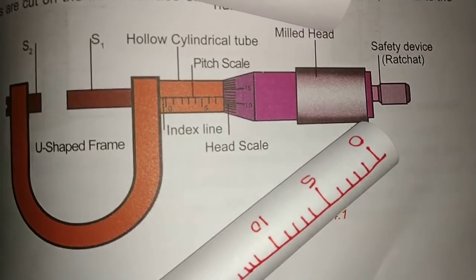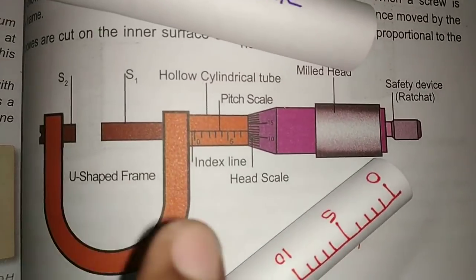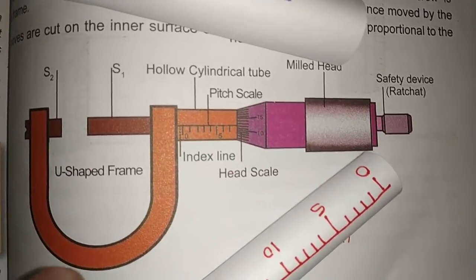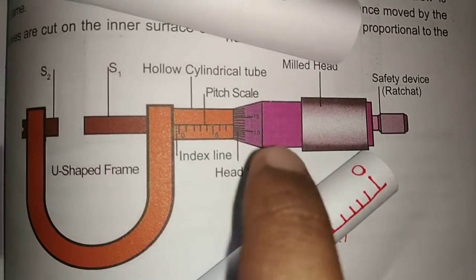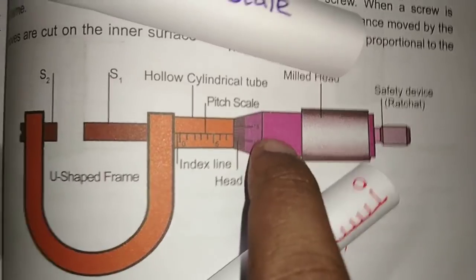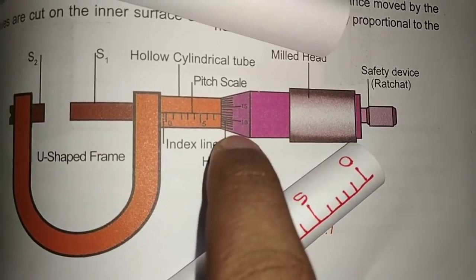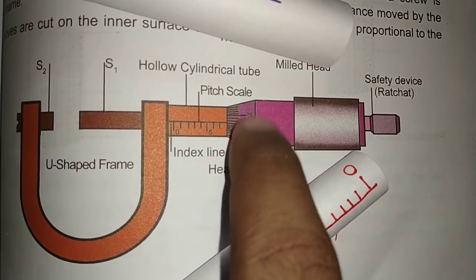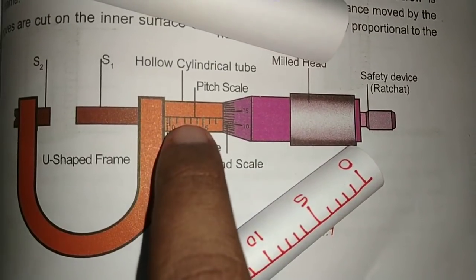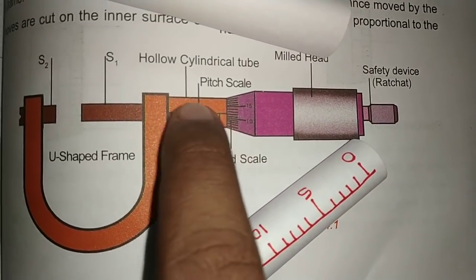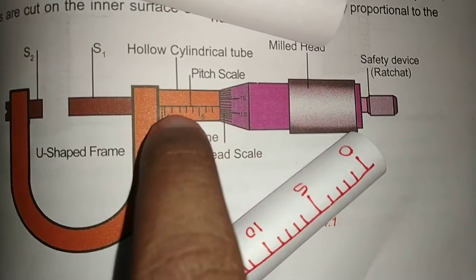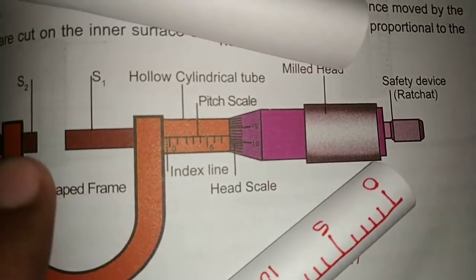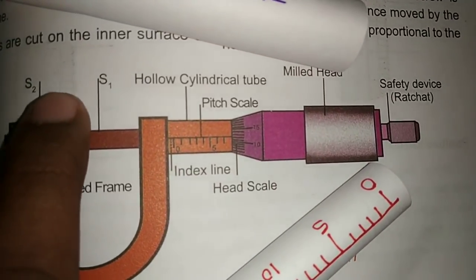Let's do a screw gauge with the measuring instrument — it's very simple, we can use one word. This is the head scale, and this is the pitch scale. We will place the pitch in this way.